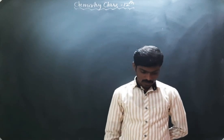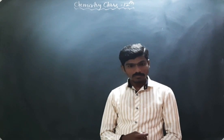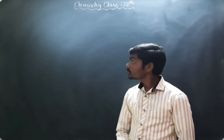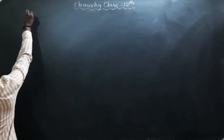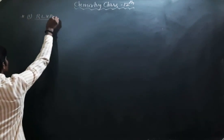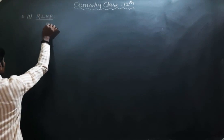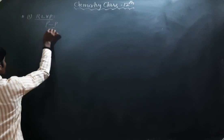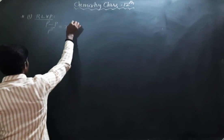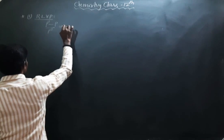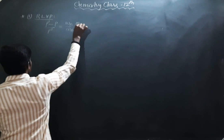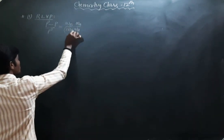The first colligative property is relative lowering in vapor pressure, RLVP. The formula is: ΔP/P₀ = XB, or in place of XB, you can write number of moles of solute divided by number of moles of solute. That is WB/MB × MA/WA, to calculate the molar mass of solute. This is the first formula.